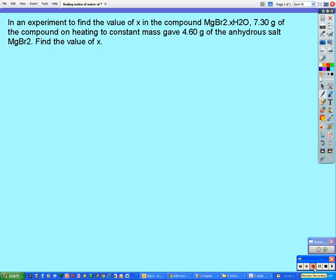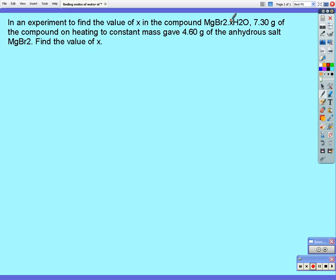Okay, here we've got a question where we're trying to find the formula of the hydrated magnesium bromide. In other words, we're trying to find the value of x, the value of x, or the number of moles of water of crystallization, or number of moles of water of hydration in a hydrated compound, magnesium bromide, MgBr2·xH2O.